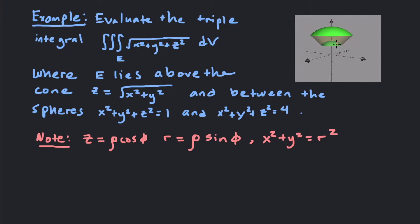We got our bounds to figure out. Theta is always the bound that goes around this way. Phi is always going to be this bound. So phi is going to go from 0 to the cone, and then rho is going to go from 1 out to 2. So rho is going to go from 1 to 2.